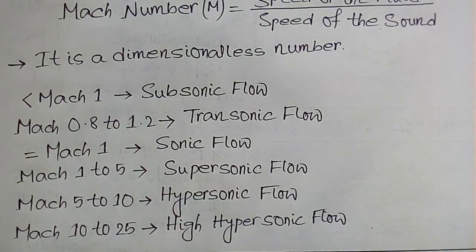When the fluid velocity is lower than Mach 1, the flow is called subsonic flow. When the flow range is from Mach 0.8 to 1.2, it is called transonic flow.